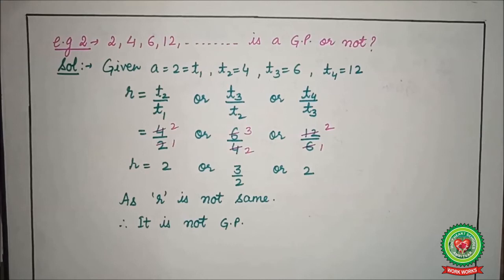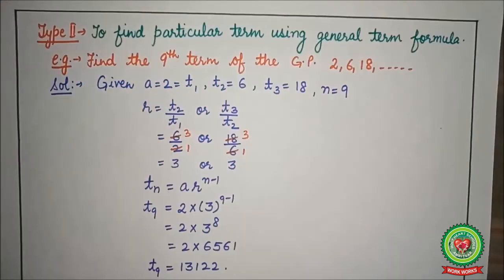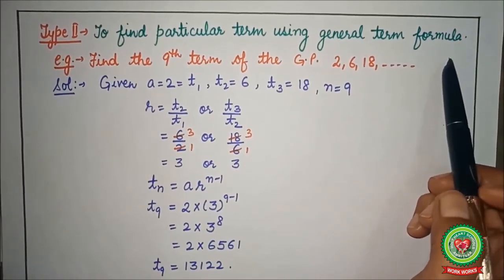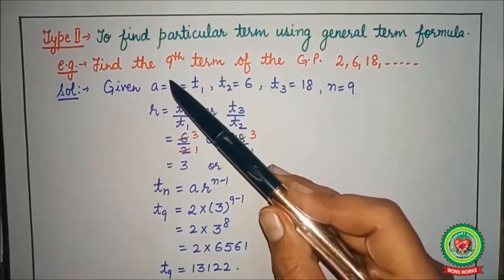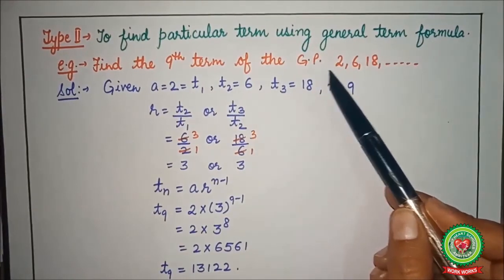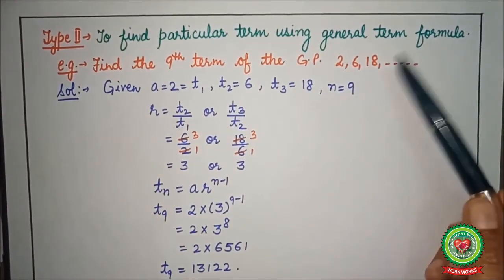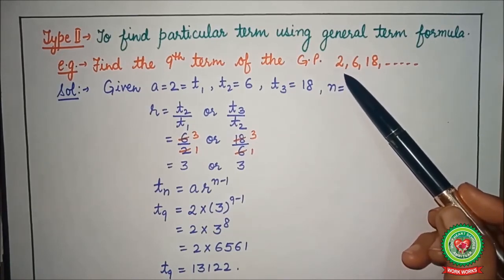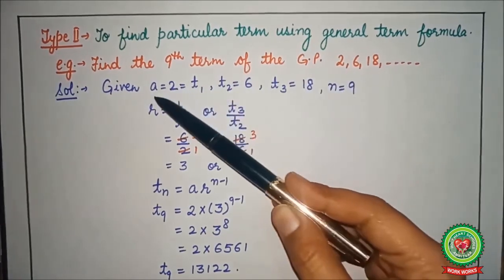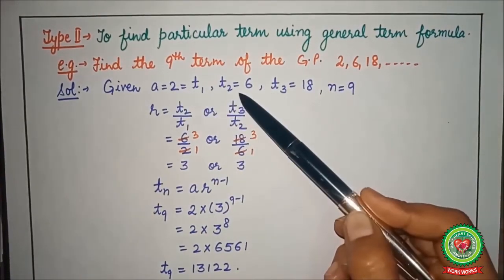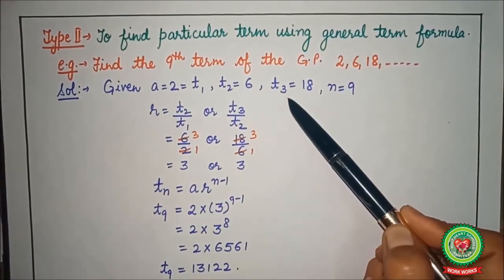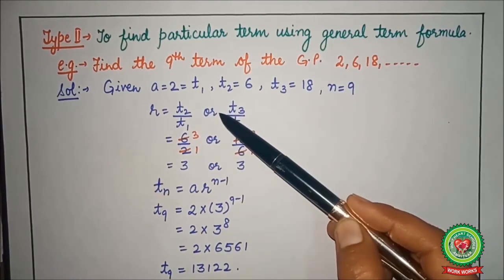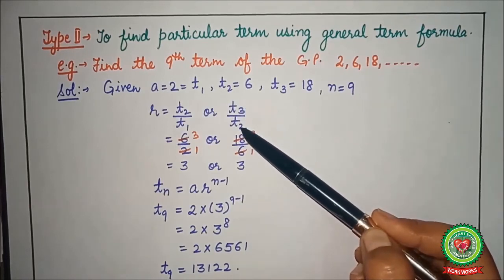Let's discuss the second type of GP, to find the particular term using general term formula. Now for example, find the 9th term of the GP 2, 6, 18 and so on. Here GP series is given so we can find a, we can find common ratio. So a is equal to 2, that is the first term. Second term is 6, third term is 18. Now r must be equal to second by first term or third by second term.